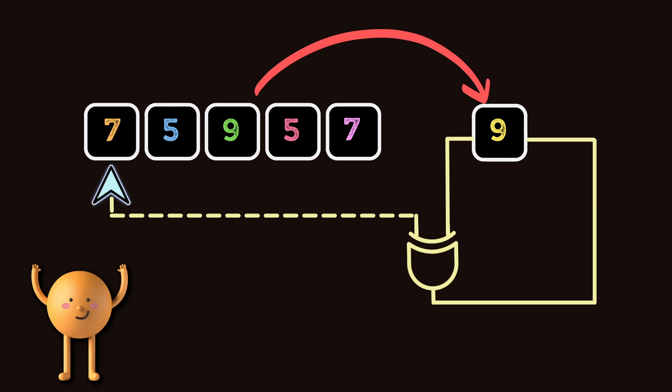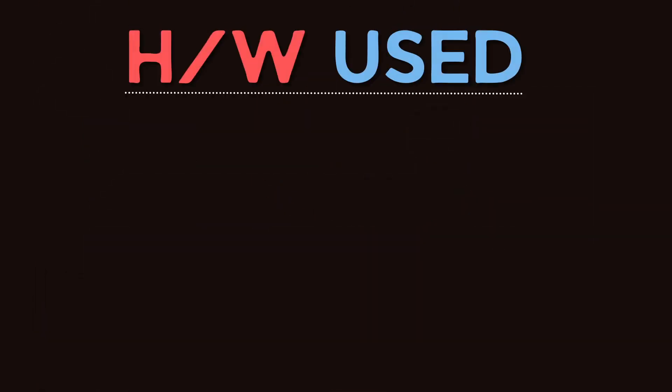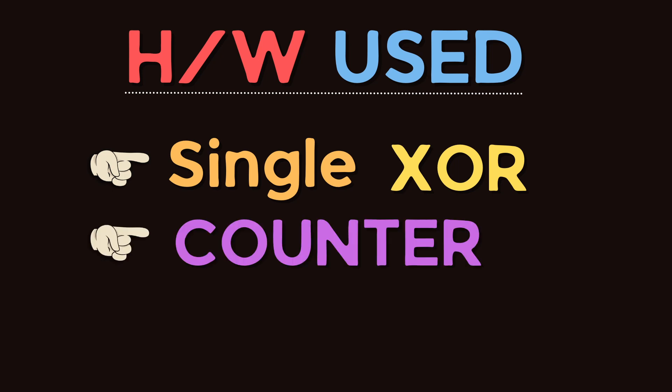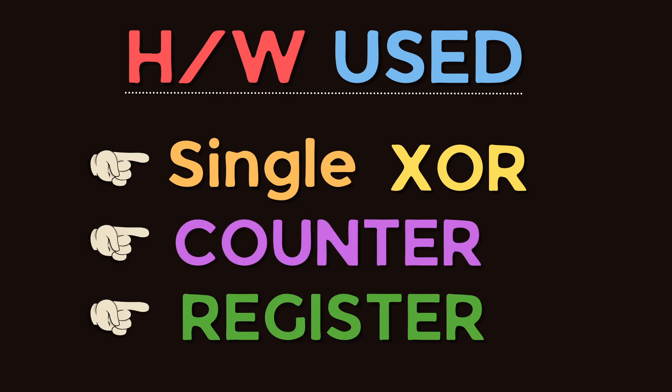So we will get 9 as our output, which is required. The hardware used is a single XOR gate, a counter to move the pointer, and a register.